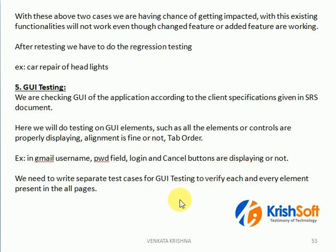From the testing side also, according to the design, we verify whether all the elements are present or not. If any element is not present — like a header or footer is missing according to the requirement — that is a bug. We need to report it to the development team for fixing. If alignment is not proper for some elements, we also need to ensure that.